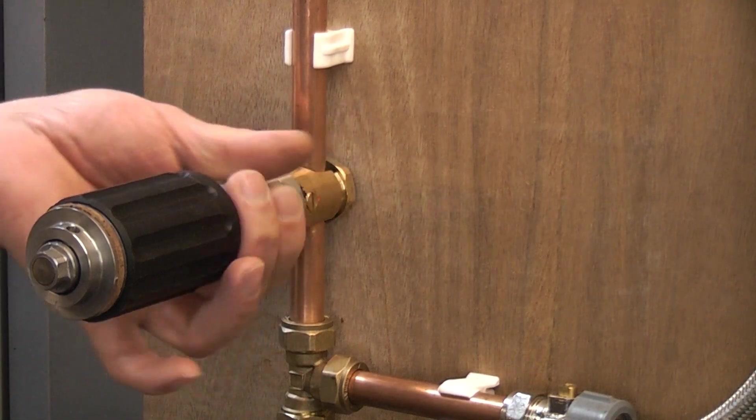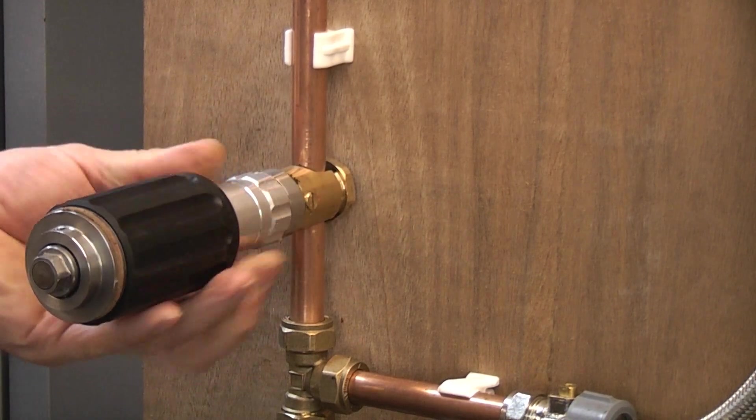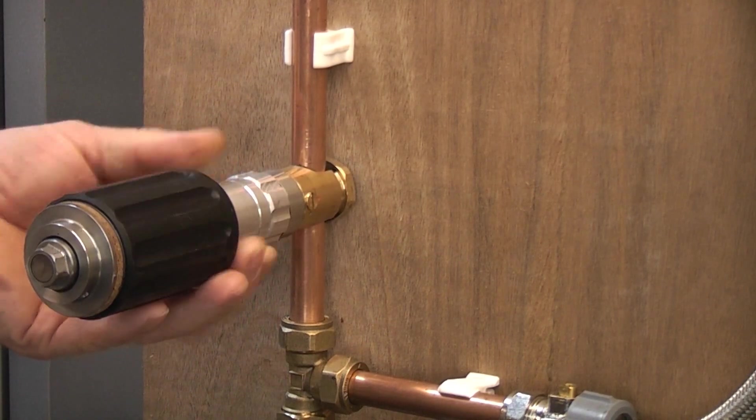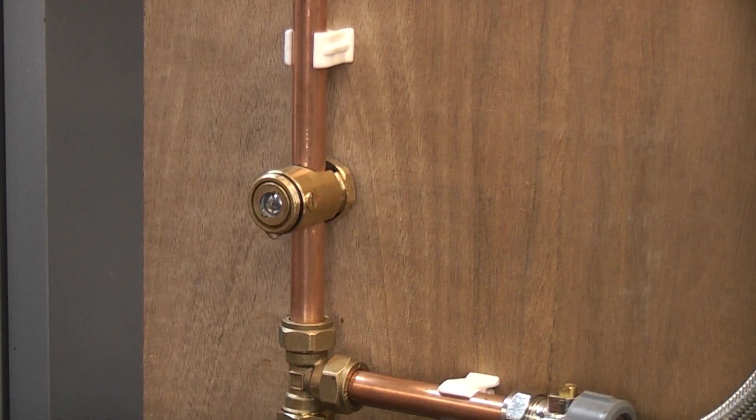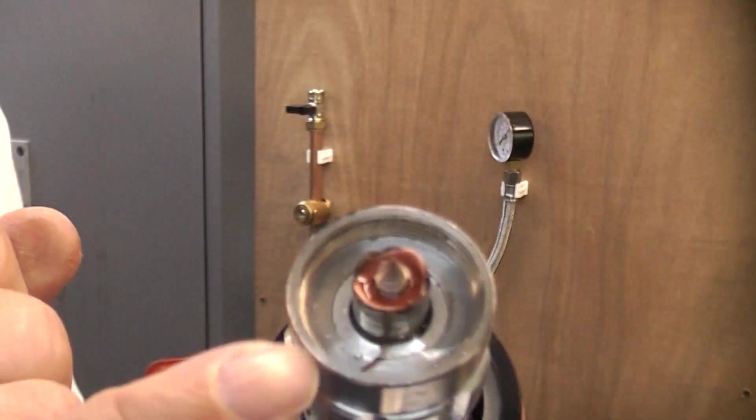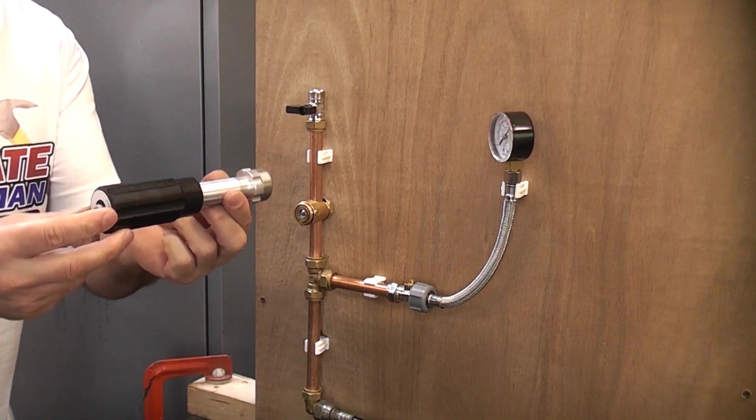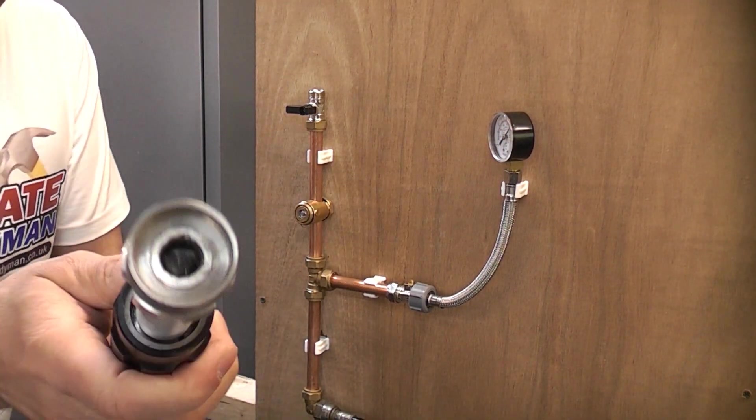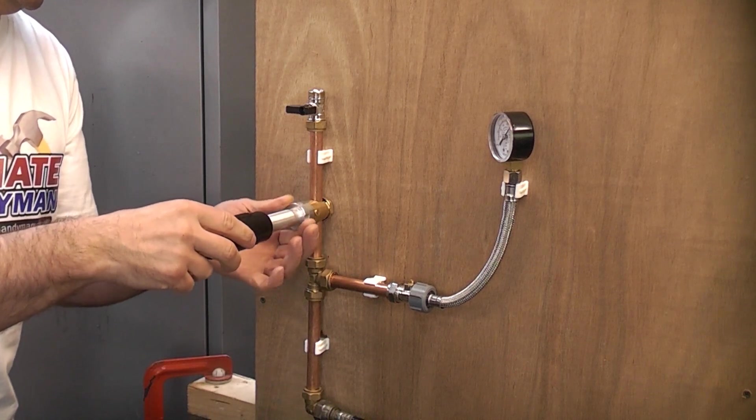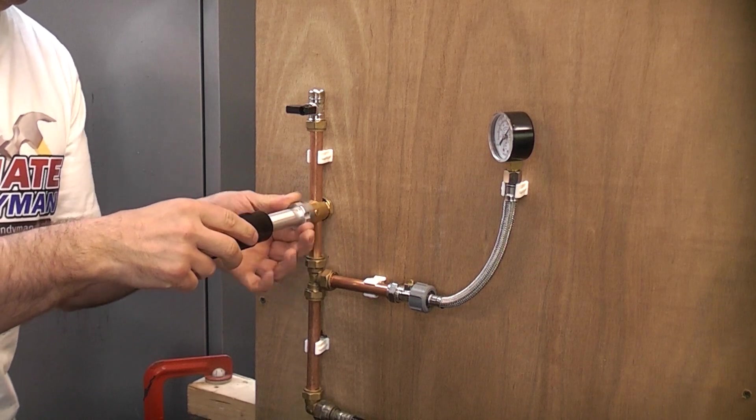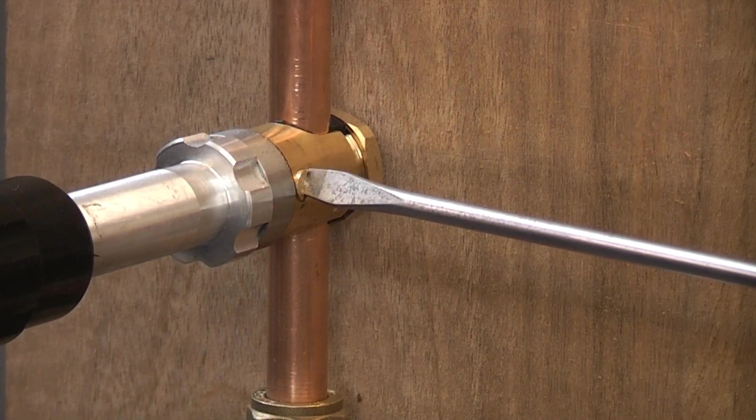We can now undo the cutter part. There will be some water that leaks out obviously when we do this. You can see there's minimal water there. If you take a look in there you can actually see the copper coupon that has been cut out. We can now take the 15mm bung tool. Now we can screw that onto the valve. Once we've done that we can then open the valve.